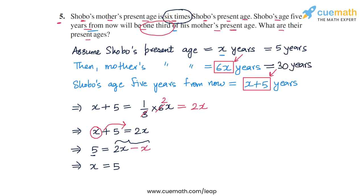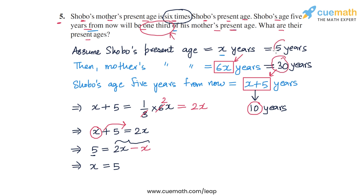Now let's verify this answer. Shobo's age five years from now will be x plus five, which is 10 years. We can see that 10 is one-third of the mother's present age of 30, which is exactly what the problem states. So the answer — Shobo's present age is five years and his mother's present age is 30 years — is correct. This completes question number five.